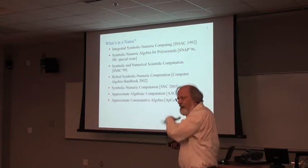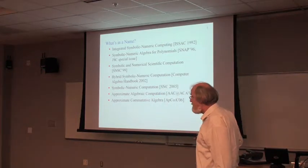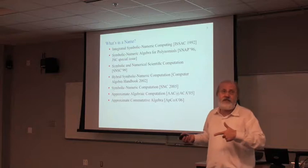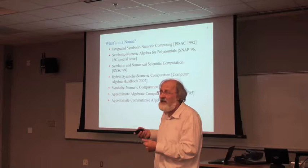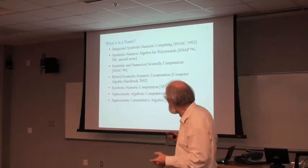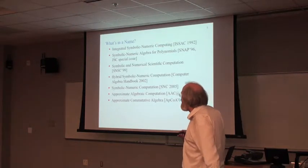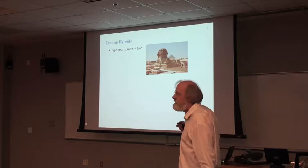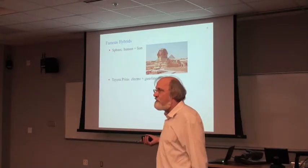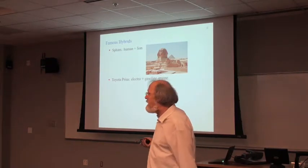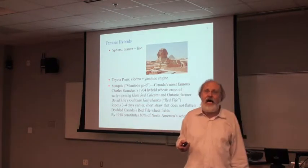And afterwards, I had a list of previous results, but I found it boring. So, all I will do is I will come back briefly to the approximate GCD problem. Because this is sort of a problem that there's a lot of work in. It's not that interesting anymore. But, I made a mistake here. I didn't realize. My next slide actually was famous hybrids. So, there is a hybrid. The Sphinx, the Toyota Prius. And in Canada, get this talk in Canada, it's the Marquis, a hybrid of wheat. I don't know whether you know this story.